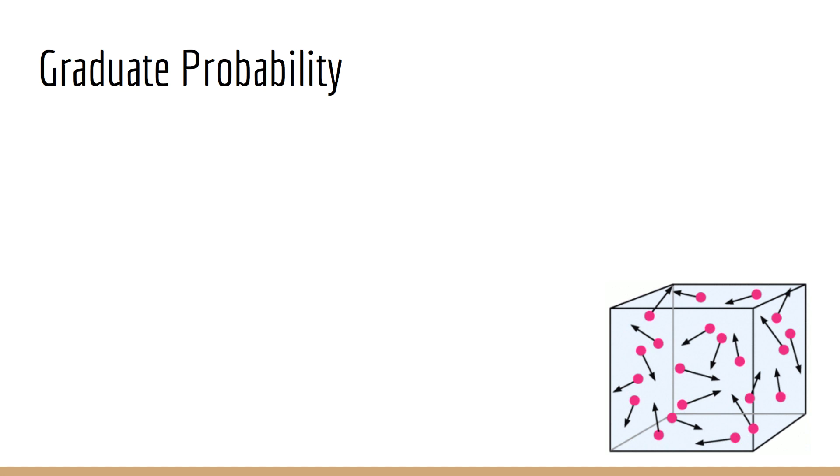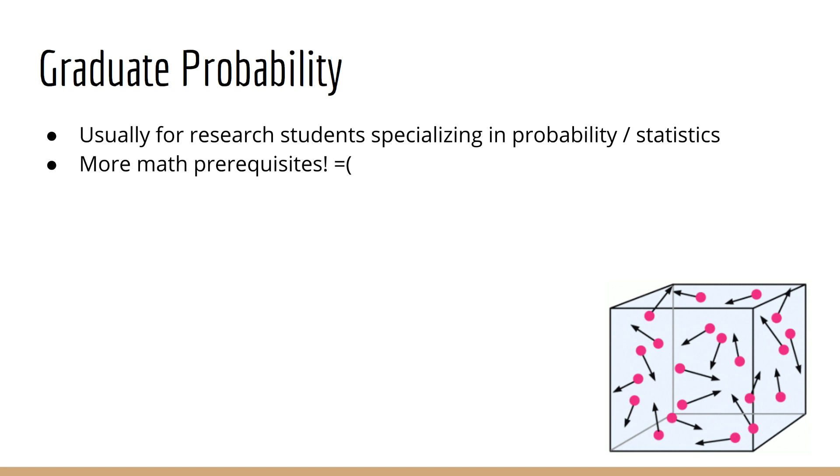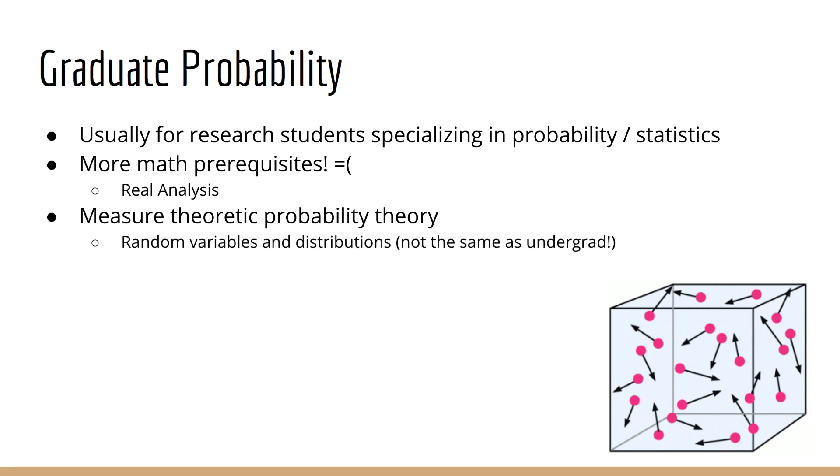Finally, we have our highest level of probability, graduate-level probability. This is usually studied by research students who want to specialize in probability and statistics. Graduate probability is a whole new beast. First, there are even more mathematical prerequisites to get to this level. Specifically, you'll want to take real analysis. To keep things short, graduate probability is about a formal and rigorous definition of probability. You'll learn about measure-theoretic probability theory, and you might even relearn about basic concepts such as random variables and distributions. But this is not the same as what you learned in undergrad.